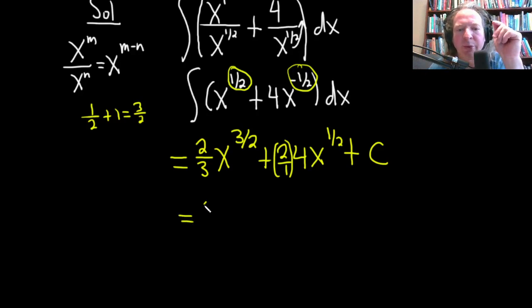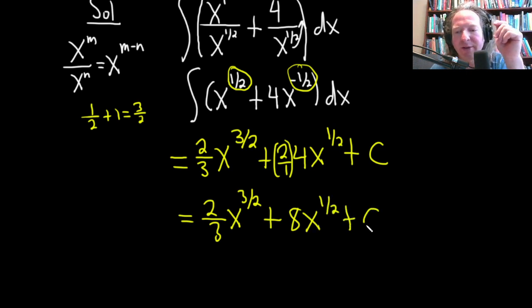So this is equal to, let's see, 2 thirds x to the 3 halves. And then 2 times 4 is 8. So this is going to be 8x to the 1 half plus our constant of integration, capital C.